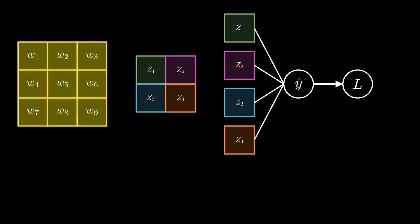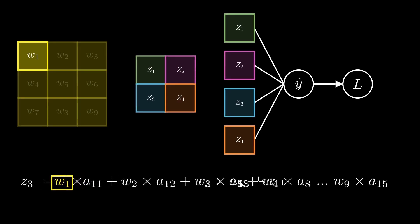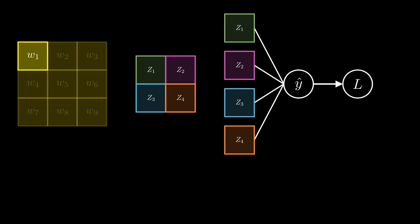Let's get an intuition for how we can set up this equation. To make everything easier to digest, let's look at it one term at a time, starting with w1. A change in w1 will cause a change in all the z values, because w1 appears in all of the equations for the z's. The change in the z values will in turn cause y-hat to change, which in turn will cause the loss to change. Armed with this knowledge, we can set up the equation for the partial derivative of the loss with respect to w1.